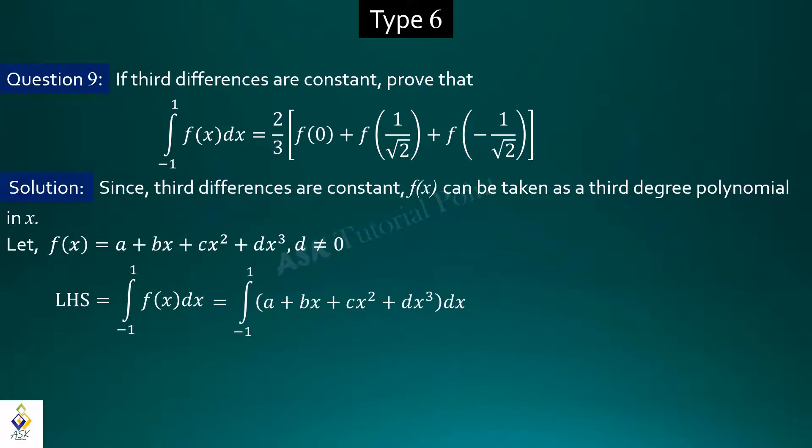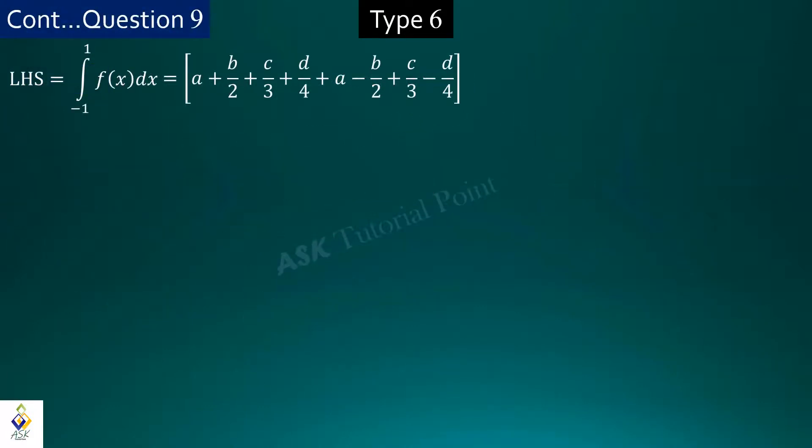By putting fx equal to this expression, and if we integrate this function over the range minus 1 to plus 1, then we will get this expression. Placing upper limit and lower limit and simplifying, we will get 2 times a plus c by 3.